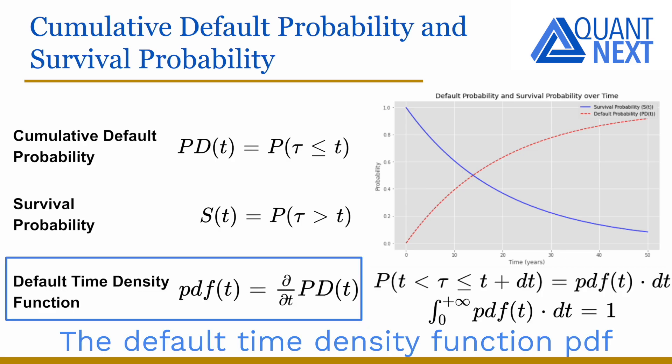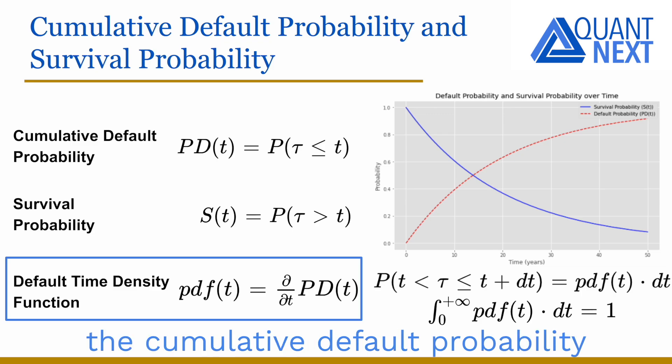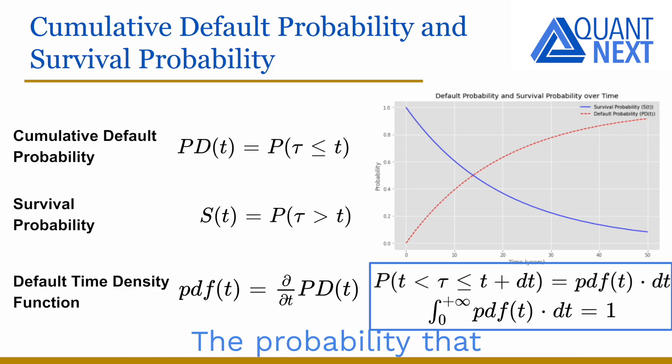The default time density function PDF is the derivative of the cumulative default probability with respect to time. The probability that there is a default between t and t plus dt is equal to PDF of t times dt. And the integral between 0 and plus infinity of PDF is equal to 1.